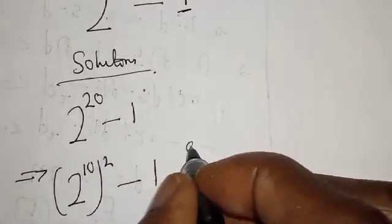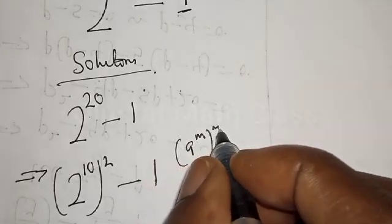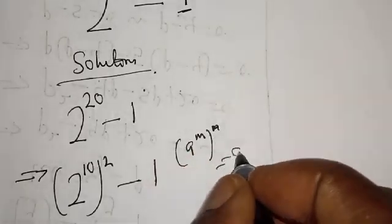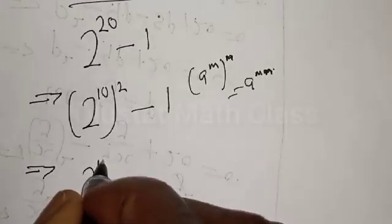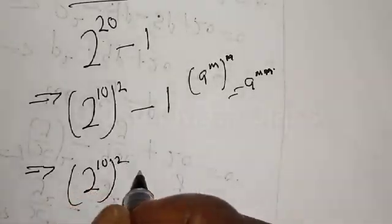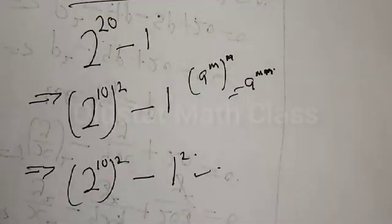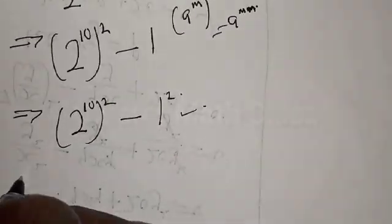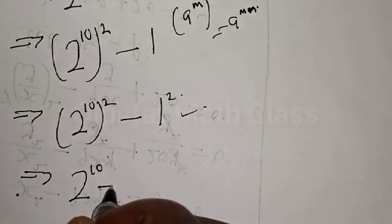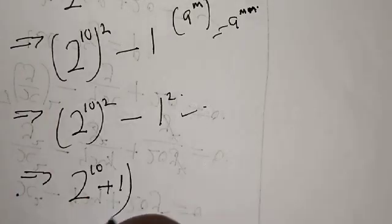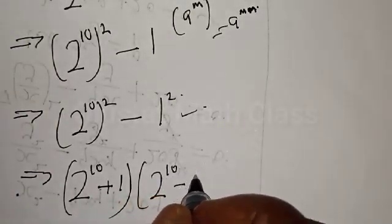That is, if you have a^m raised to power n, we apply the difference of squares identity. So 2 raised to power 10 squared minus 1 squared can be expressed as 2 raised to power 10 plus 1, multiplied by 2 raised to power 10 minus 1.